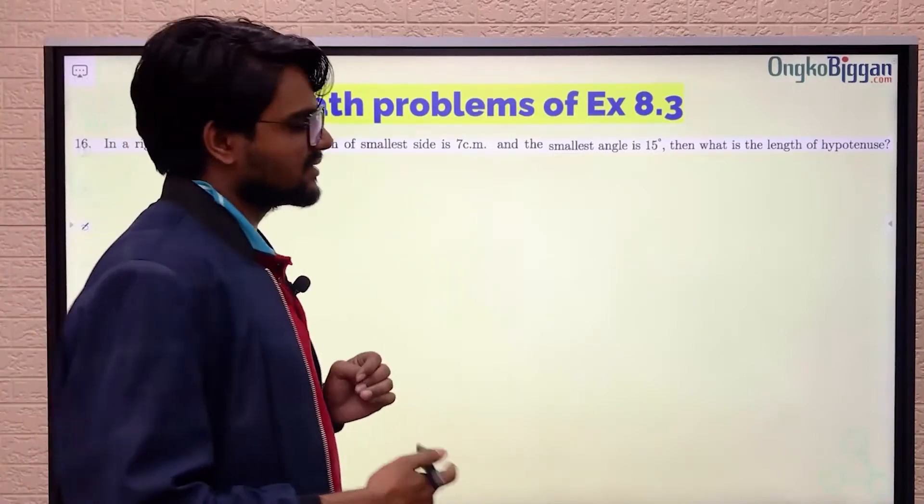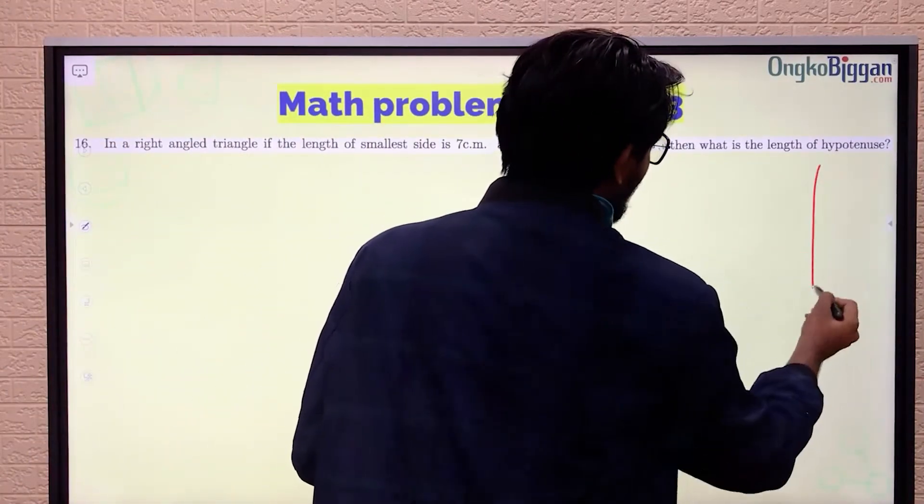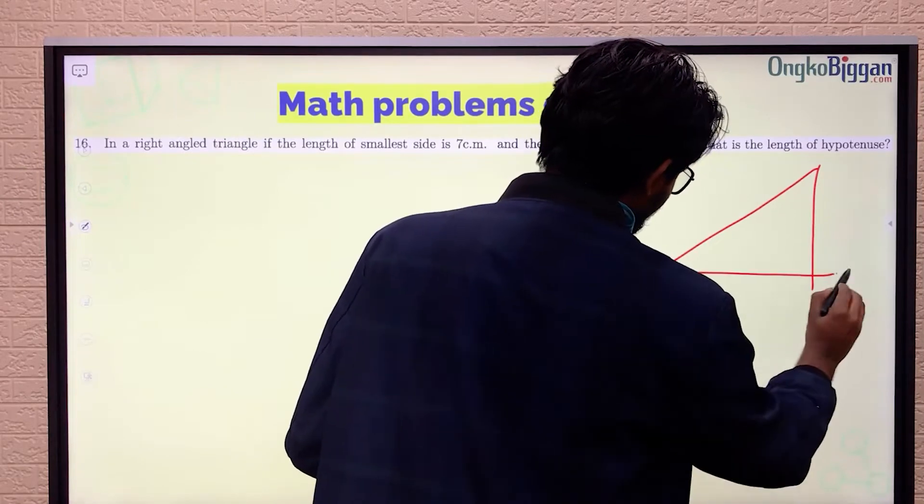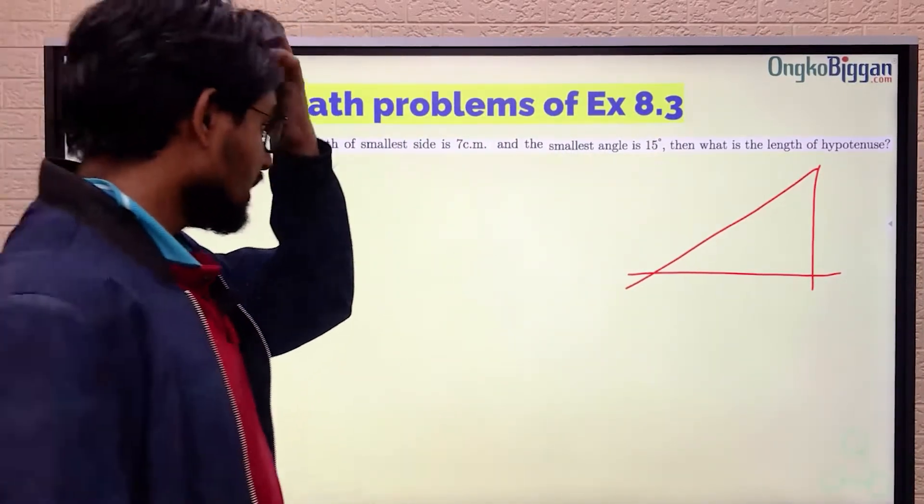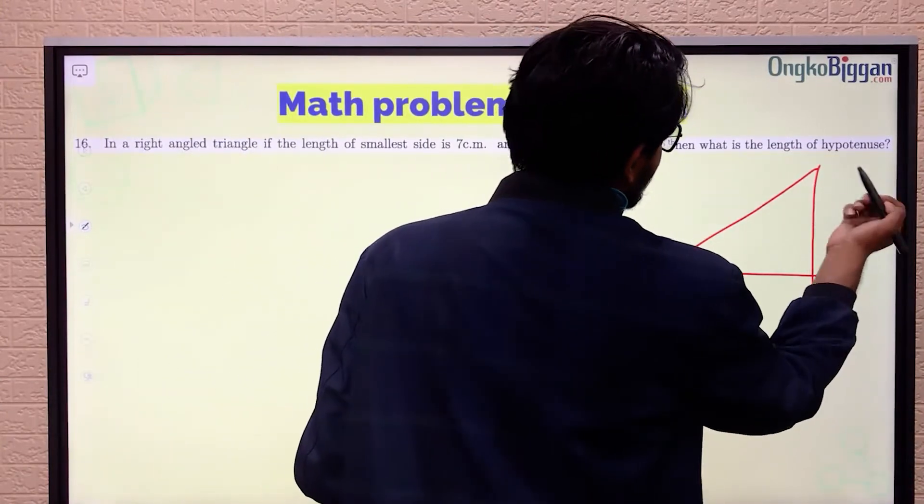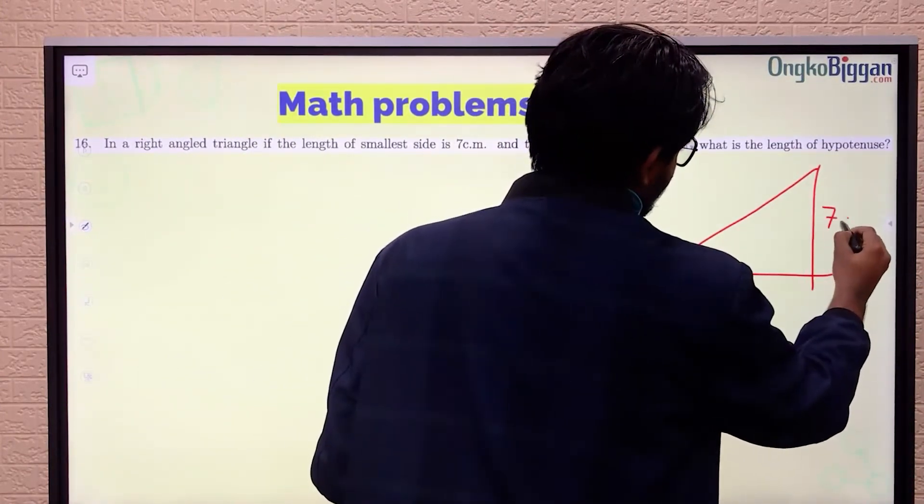So I will draw a right-angled triangle first. This is our right-angled triangle, and we take any of the sides as the smaller side. I guess this is our smaller side.